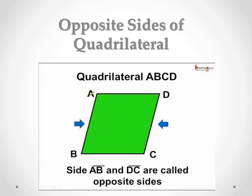Opposite sides of a quadrilateral. Here you see ABCD is a quadrilateral. AB and CD are opposite sides, and BC and AD are opposite sides. These are the opposite sides of the quadrilateral.